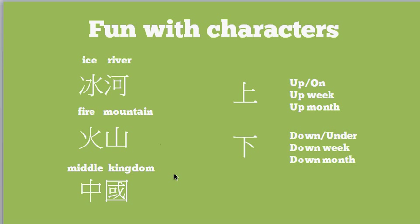One of the things you can start to do with Chinese characters after you learn a few is you can start to put them together in combinations to make new words. Here's an example: this is 'ice' and this is 'river.' You put them together — think for a second, what's an icy river? It's actually a glacier. So you've been able to take two characters that you'll probably learn quite quickly and make another more complex word.